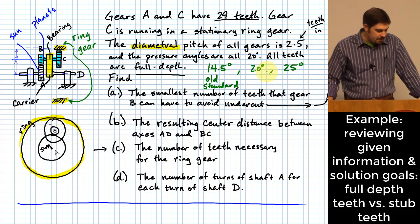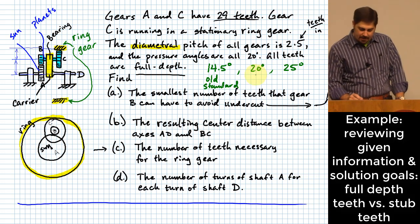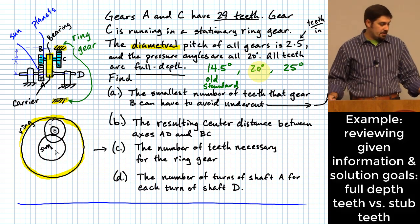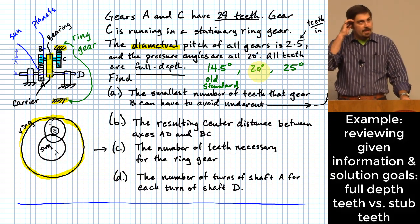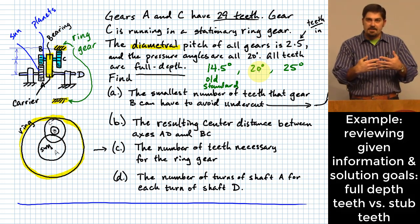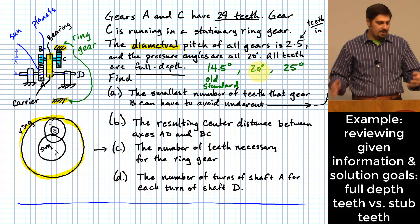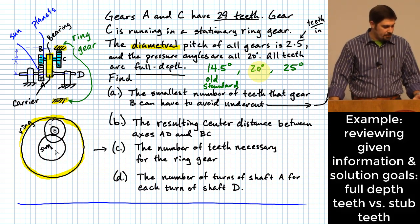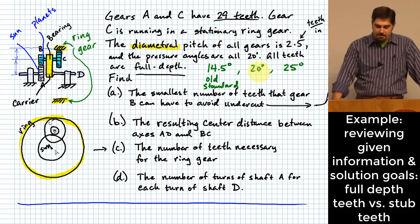The teeth we'll use are full depth. There are two standards within gear design: full depth teeth and stub teeth. One advantage of stub teeth is that if you don't need as much penetration between teeth, you can fit them into more compact spaces. There's also less gear tooth action required per tooth. But there are advantages to both, and we're going to specify full depth teeth.